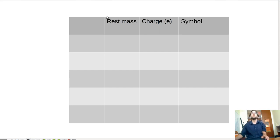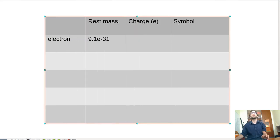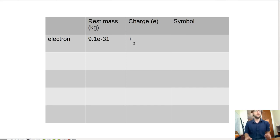So electrons have a rest mass of 9.1 E to the negative 31. Oh, and I'm a bad scientist, and I didn't put my units on rest mass. So let's go ahead and do that. So that's in kilograms.